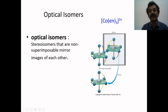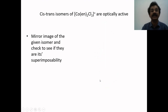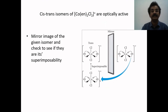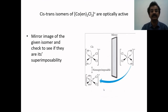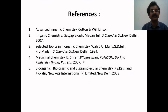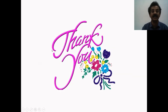Regarding optical isomers, it can be well illustrated diagrammatically using mirror image phenomena. These are mirror images of each other, and by rotating, a superimposable geometry is developed, and therefore they exhibit mirror image isomerism. The third example — dichlorobisethylenediamine — exhibits only geometrical isomerism, not optical isomerism. These are the references selected for this presentation. Thank you very much.